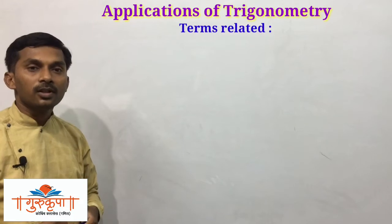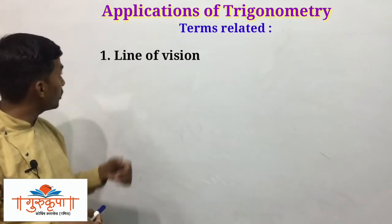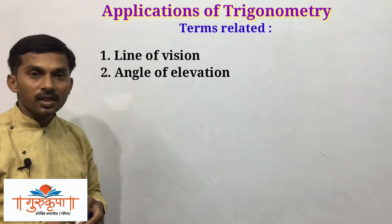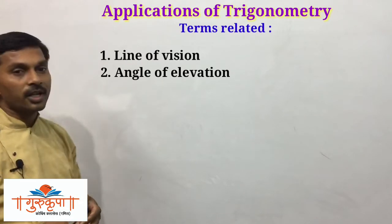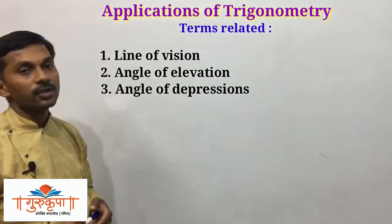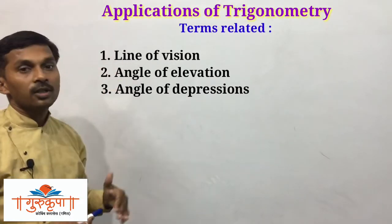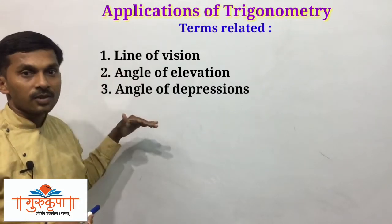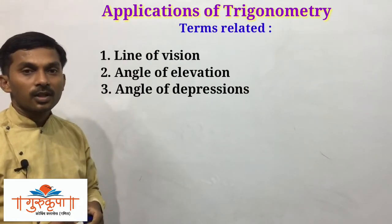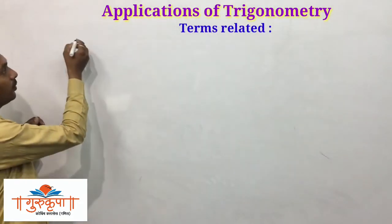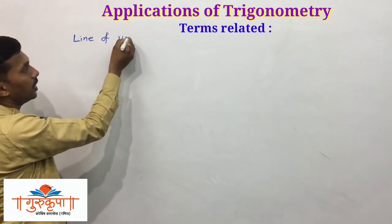We have to study three terms. The first one is line of vision. The second one is angle of elevation. And the third one is angle of depression. We have to study these three terms related to the application of trigonometry. We will first learn about the line of vision.